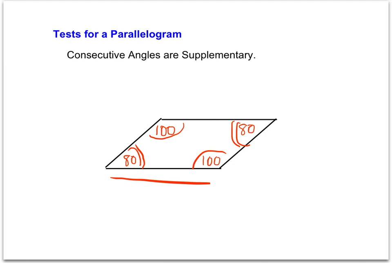So if you have a quadrilateral and any of these six conditions are true, then you can say yes, it is a parallelogram.